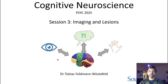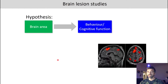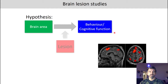This is the fifth and last part of today's session, where we will be talking about brain lesion studies. The underlying hypothesis in brain lesion studies is that we have a certain brain area that is responsible for some behavior or cognitive function, and because of the lesion we should observe that the behavior or cognitive function is affected.